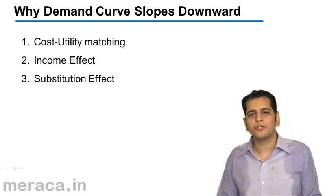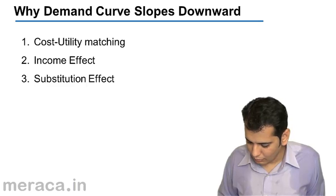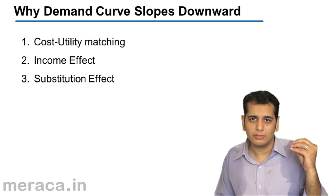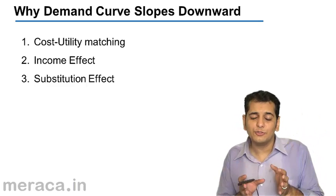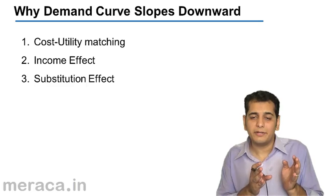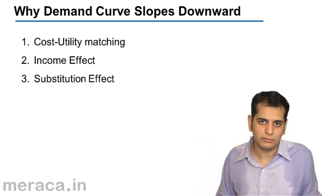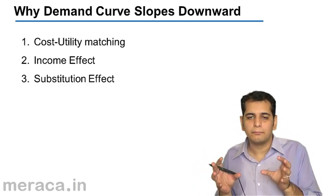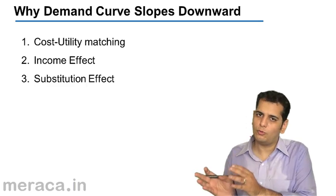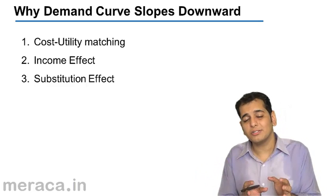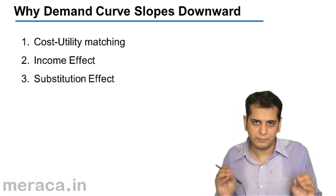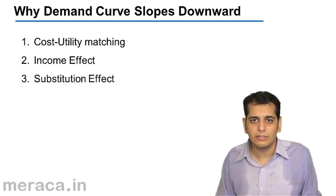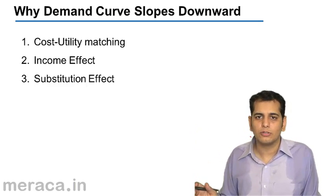The next point is substitution effect. In substitution effect, what happens is when the price of a product increases, the consumers of that product tend to buy the substitute of that product. In our case, let's say Pepsi and Coke. Pepsi is a substitute of Coke and Coke is a substitute of Pepsi. There are certain consumers who consume Pepsi, and when the price of Pepsi rises, these consumers shift to Coke.